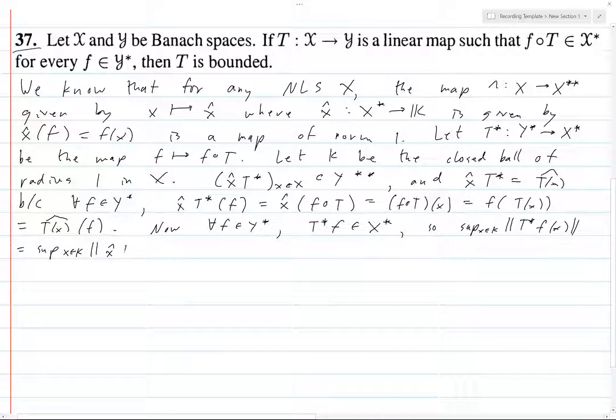This is by that identity that we proved. Let's write out: this is x̂T* of f. Right, is that what we proved? Yeah, that is exactly what we proved up here. We proved x̂T* equals... wait, but that's a hat. f∘T is just T* of f of x, which is precisely this.